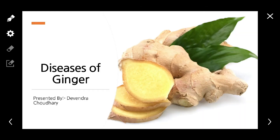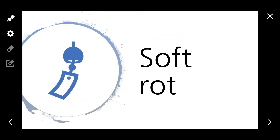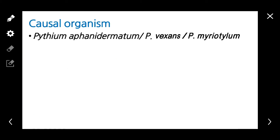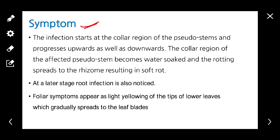Welcome. In this video we are going to discuss about the disease of ginger, that is soft rot. This disease is caused by Pythium aphanidermatum, or Pythium vexans, or Pythium myriotylum.